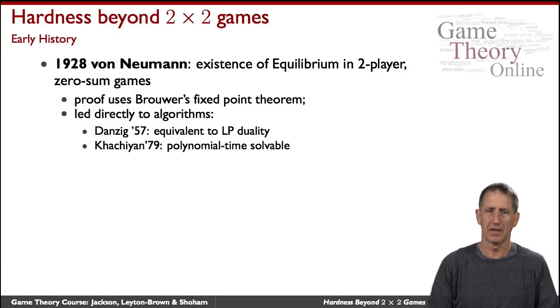Let's start with a little history. John von Neumann, one of the founders of modern game theory, when he investigated zero-sum games, proved the existence of equilibrium there, and he used what's known as the Brouwer Fixed Point Theorem for that.